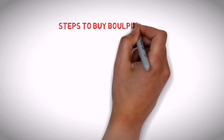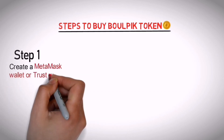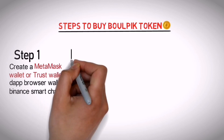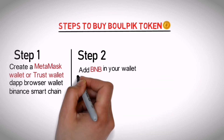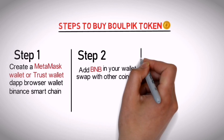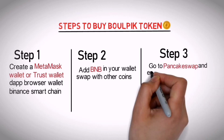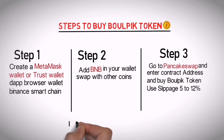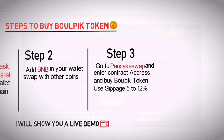Baalpik Token is currently available on PancakeSwap. Step 1: create a MetaMask wallet, Trust Wallet, or any other DApp browser wallet which supports Binance Smart Chain. Step 2: add the Binance Smart Chain network and deposit BNB in your wallet or swap with other coins. Step 3: from your DApp browser, go to PancakeSwap, input the contract address, and buy Baalpik Token. Use slippage 5 to 12%. Now I will show you a live demo — if you follow these steps, you can easily buy.